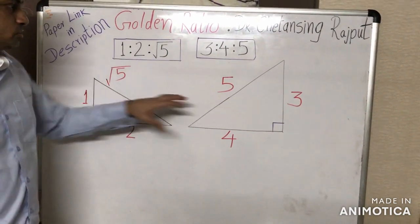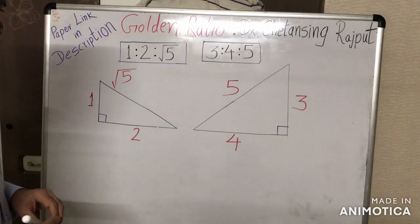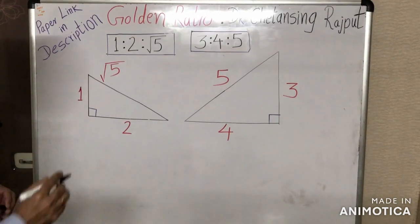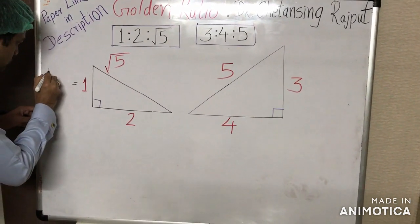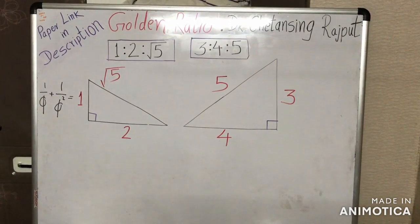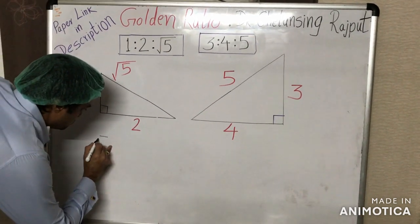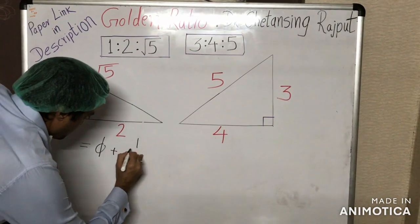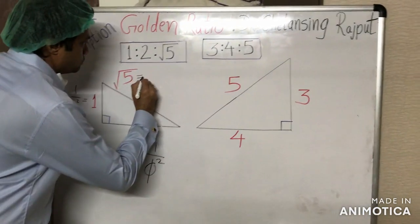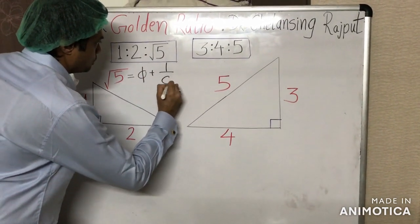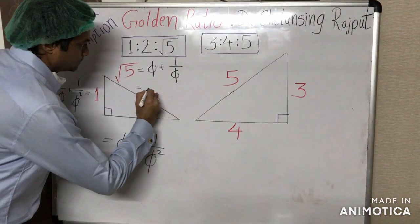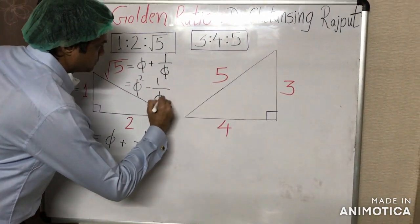First let us see the side lengths of these two triangles. As we have seen in the very first part of this video, the side lengths of the 1:√5 triangle are the precise expression of golden ratio. The shorter cathetus 1 is precisely equal to the inverse of golden ratio: 1/φ + 1/φ². Similarly, the longer cathetus 2 is precisely equal to φ + 1/φ², and the hypotenuse √5 is precisely equal to φ + 1/φ, which can also be written as φ² − 1/φ.